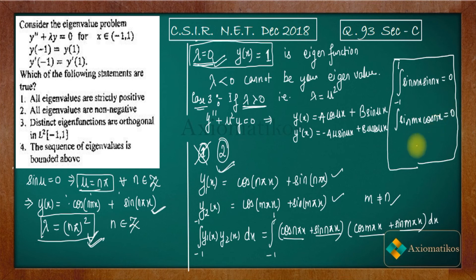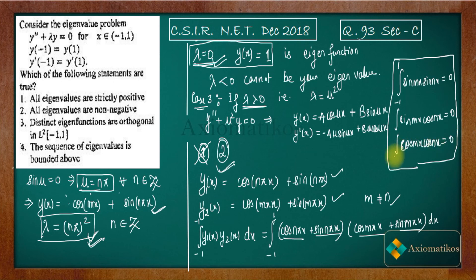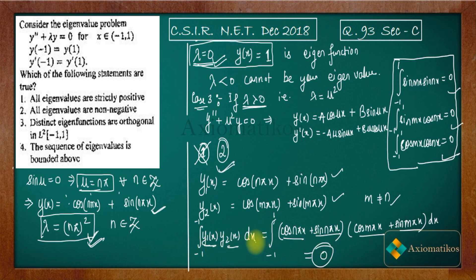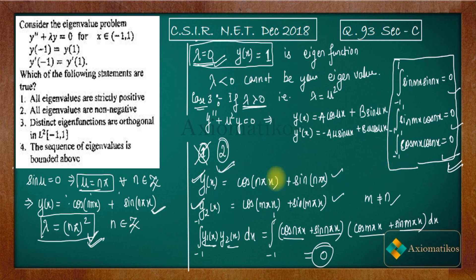If you have studied Fourier series, you will know these orthogonality relations — that sin(nx)·sin(mx), cos(nx)·cos(mx), and sin(nx)·cos(mx) all integrate to zero from −1 to 1 when m ≠ n. Using these three facts, the integral ∫₋₁¹ y₁·y₂ dx = 0, confirming y₁ and y₂ are orthogonal. So Option 3 is correct.